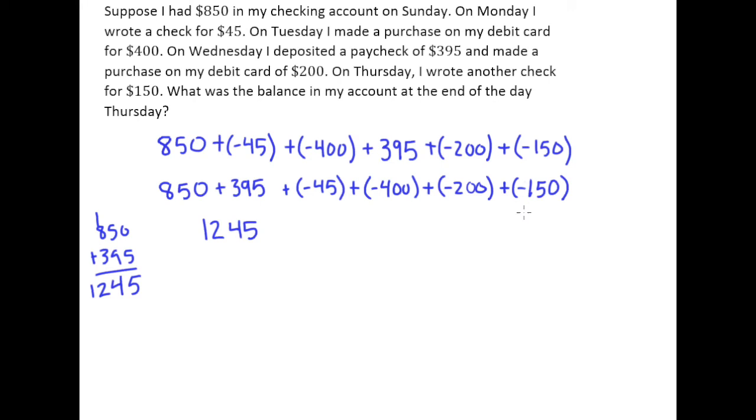But then we can just add up all the negatives at once. So that's kind of nice. So we've got $45 plus $400 plus $200 plus $150. Add those up. We've got a $5 here, a $9 there, and a $7 there. So this is plus negative $795.